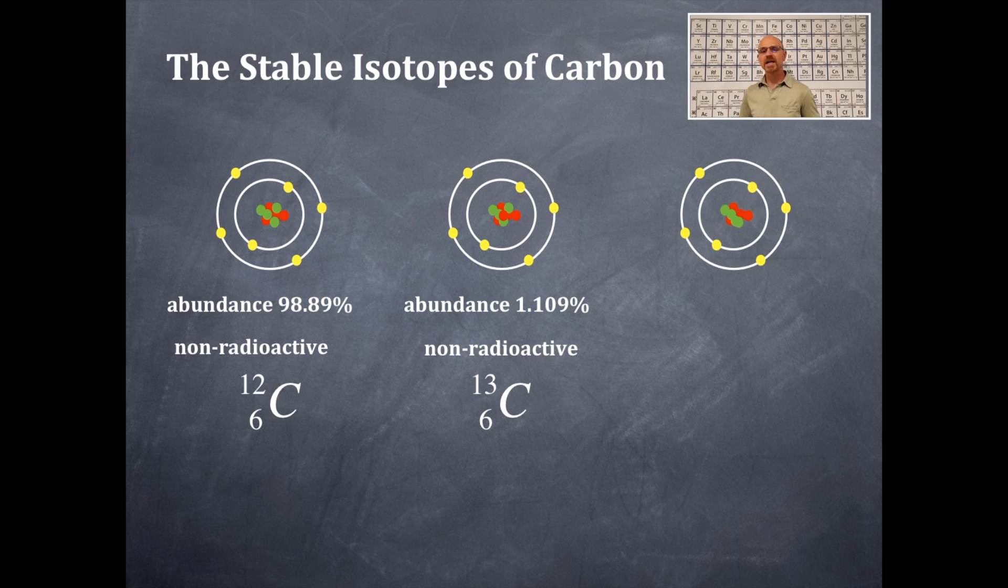Then we have one more isotope of carbon, and that is carbon-14. This is two more additional neutrons than carbon-12. And so there are eight neutrons in the nucleus and six protons. Again, all of these isotopes of carbon have six protons. That defines the element. That's the atomic number, and they all have six electrons.